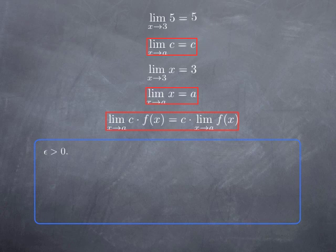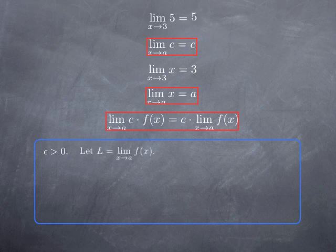We need to show that for every epsilon, we can find a delta such that whenever the distance between x and a is less than that delta, the distance between c times f(x) and c times the limit of f is less than epsilon. We know that f admits a limit — let's call that limit l — and we write out this fact using the epsilon-delta definition.